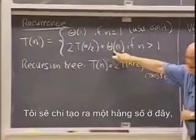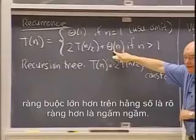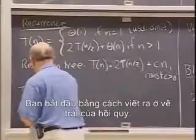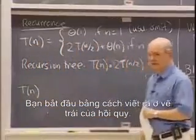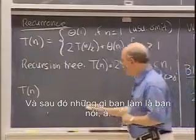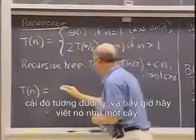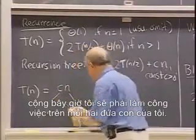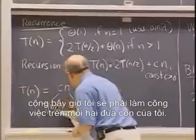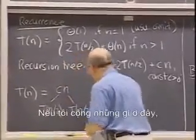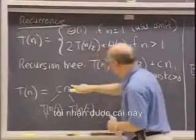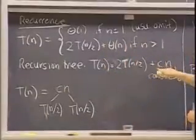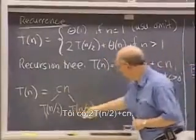I am making the constant explicit rather than implicit. The way you do a recursion tree is: you start out by writing down the left-hand side of the recurrence, and then you write it as a tree. I do cn work at the root, plus I am going to have to do work on each of my two children, T(n/2) and T(n/2). If I sum up what is here I get this, because that is what the recurrence says: T(n) is 2T(n/2) plus cn.